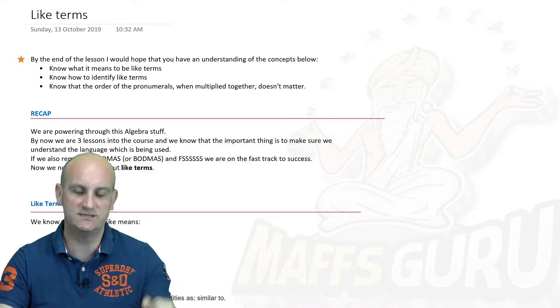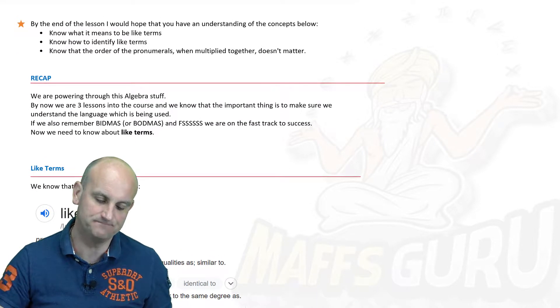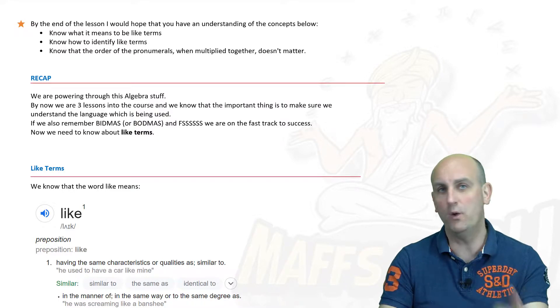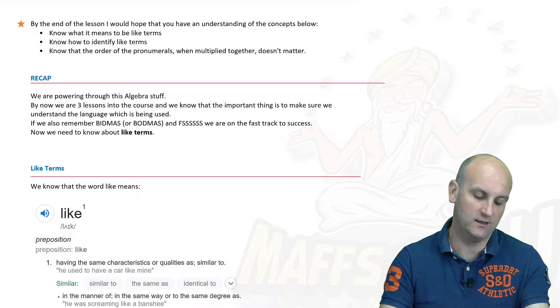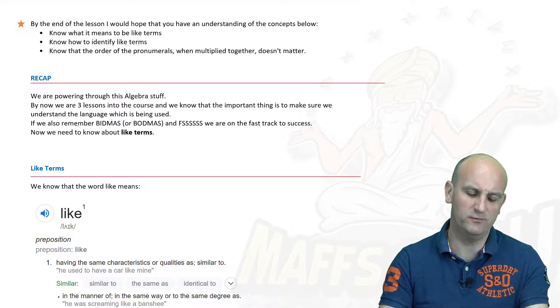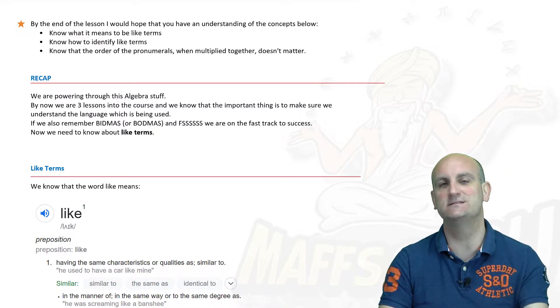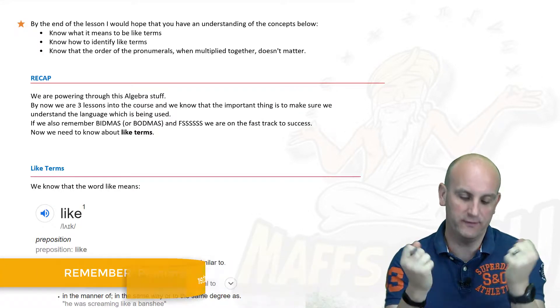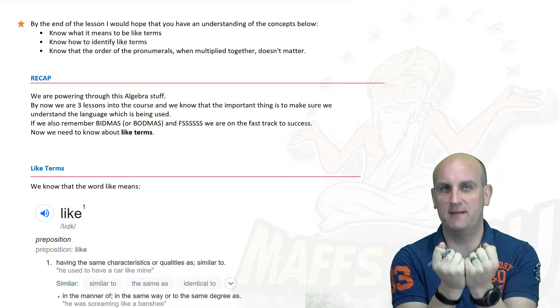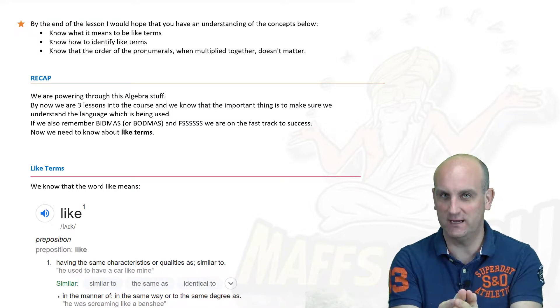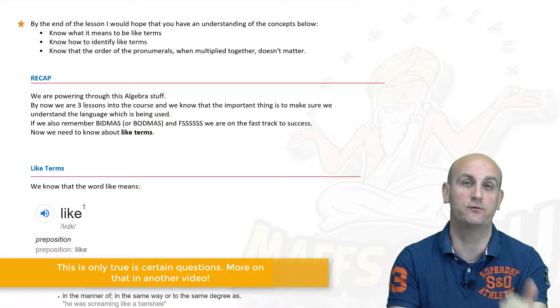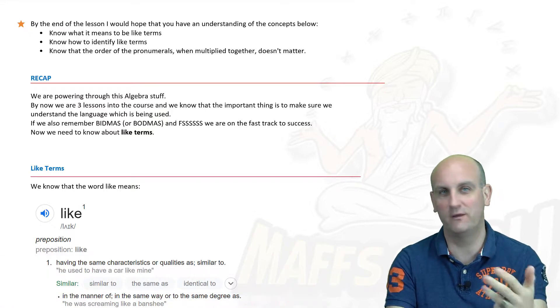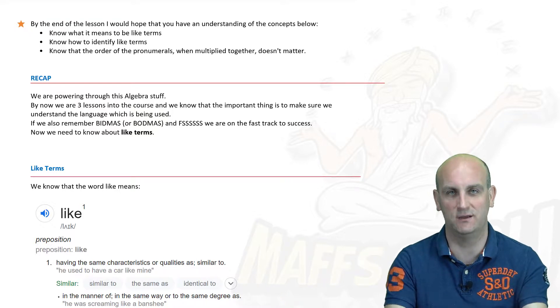What's this video about? As you can see the title is Like Terms and by the end of the lesson I would hope that you have an understanding of the concepts which are shown. Know what it means to be a like term, how to identify like terms and to know that the order of the pronumerals when multiplied together actually doesn't matter. When we order pronumerals the order actually doesn't matter because it's a trick. 1 times 2 times 3 is the same as 3 times 2 times 1. You know this.